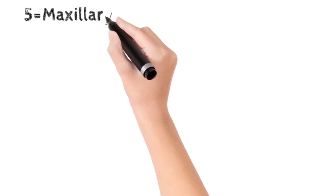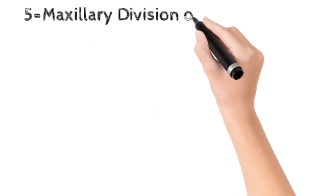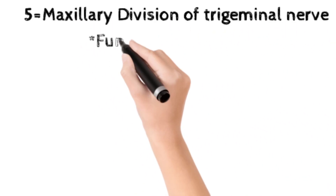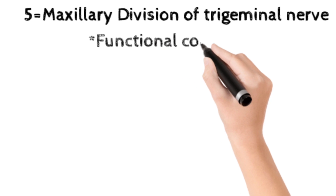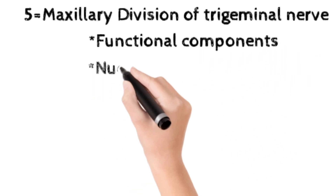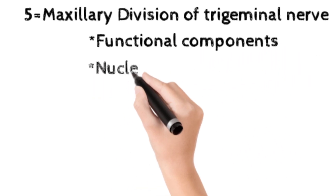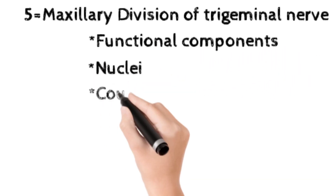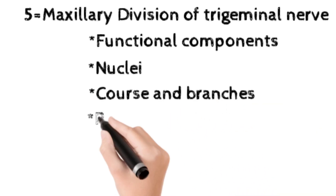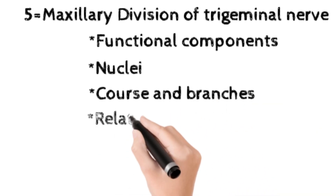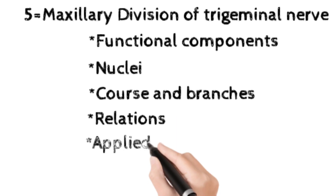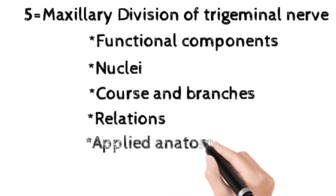The fifth topic is the maxillary division of the trigeminal nerve. The subheadings are: functional components of the maxillary division of trigeminal nerve, nuclei, course and branches, relations, and applied anatomy.